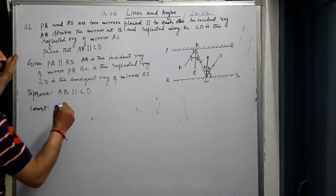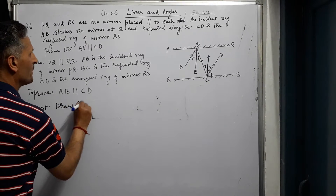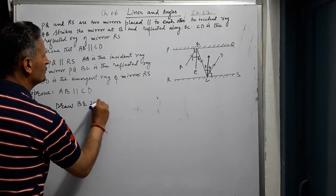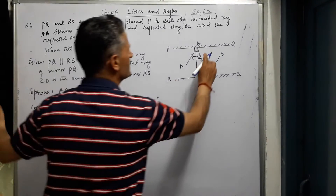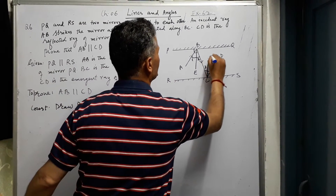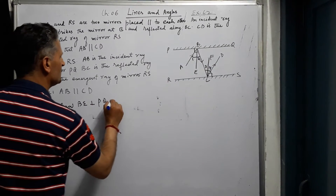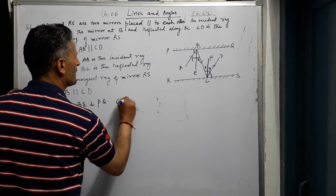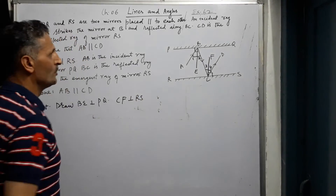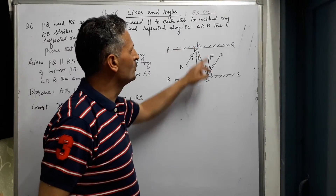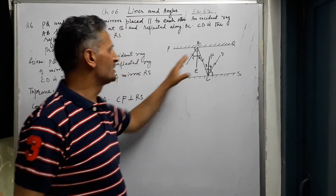The construction is: draw BE perpendicular to mirror PQ, and draw CF perpendicular to mirror RS.